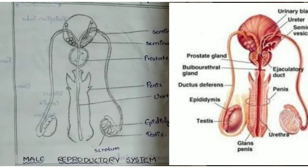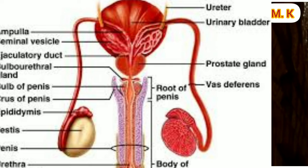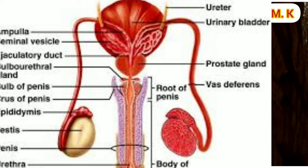The function of the prostate gland: the main function of the prostate gland is to secrete the prostate fluid, which is one of the components of semen, and it supplies nutrients to the sperm. The function of Cowper's glands: secretions of these glands help to neutralize the acidity in the walls of the urethra and aid the free flow of sperm cells.